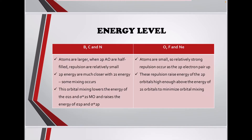Energy levels for boron, carbon, and nitrogen: atoms are larger and the 2p atomic orbitals are half-filled, so repulsions are relatively small and 2p energy levels are much closer to the 2s energy. Some mixing occurs, which lowers the energy of sigma 2s and sigma anti-bonding 2s molecular orbitals, and raises the energy of sigma 2p and sigma anti-bonding 2p.